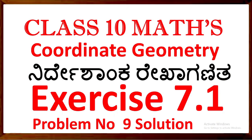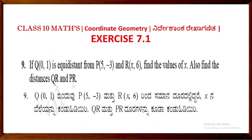Class 10 Mathematics Coordinate Geometry, Exercise 7.1 Problem 9 Solution. Q9: If Q(0,1) is equidistant from P(5,-3) and R(x,6), find the value of x. Also find the distance QR and PR.